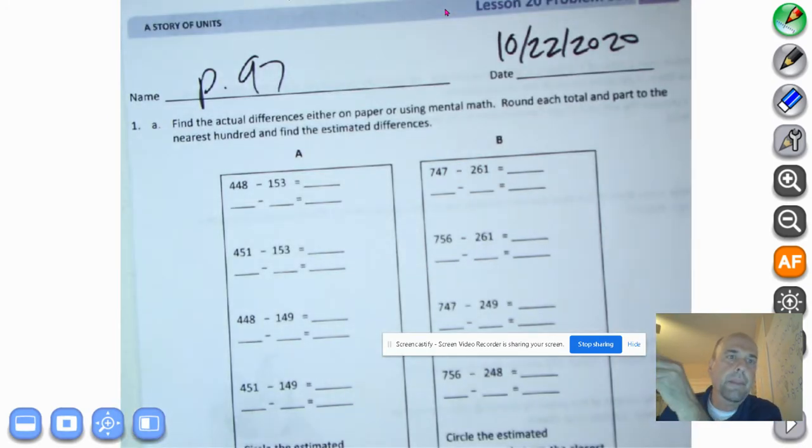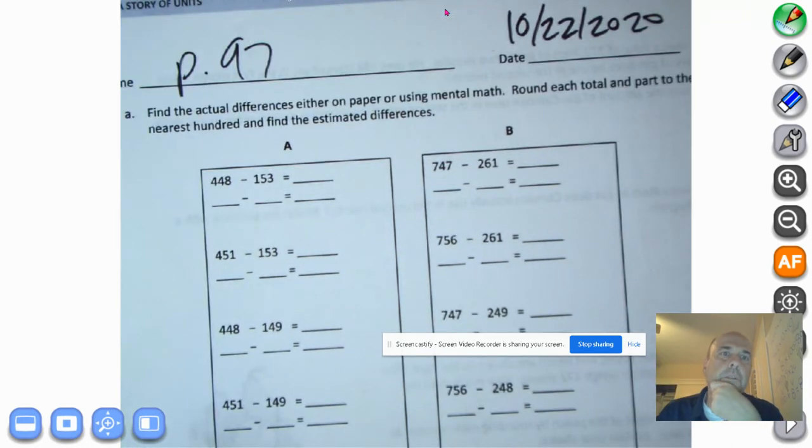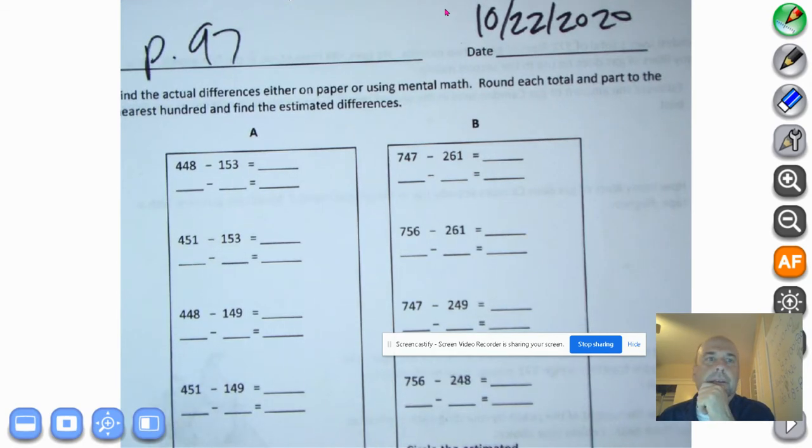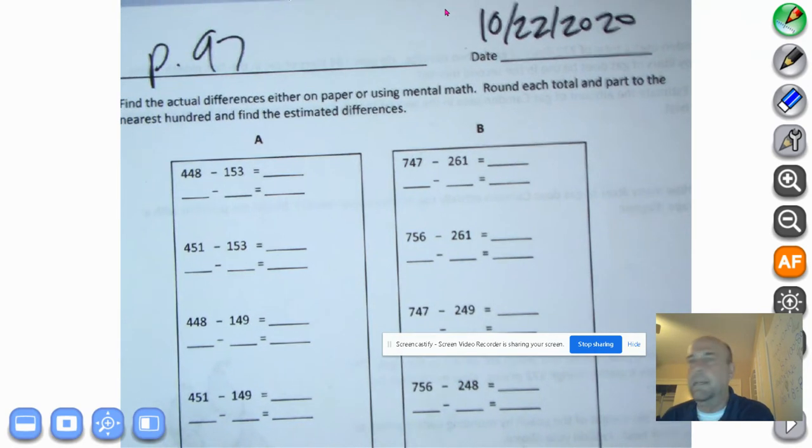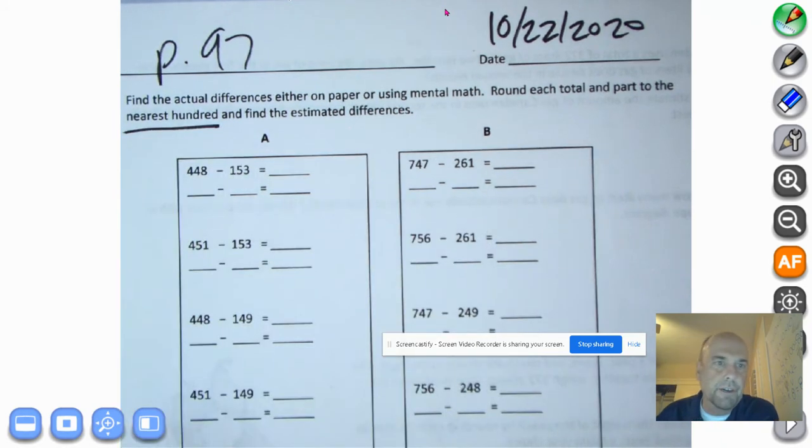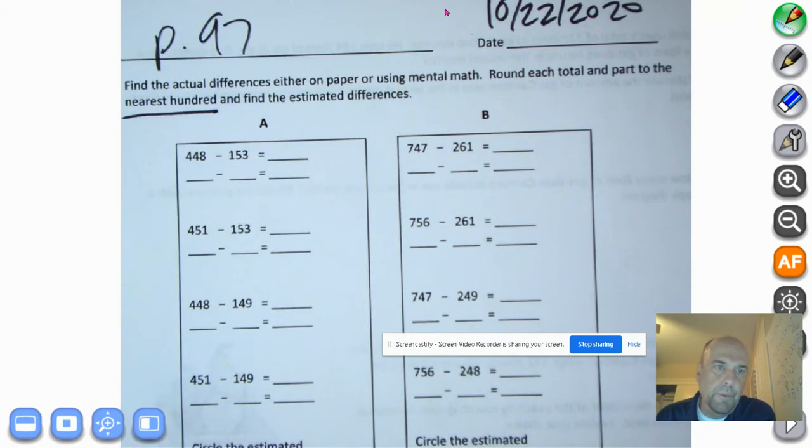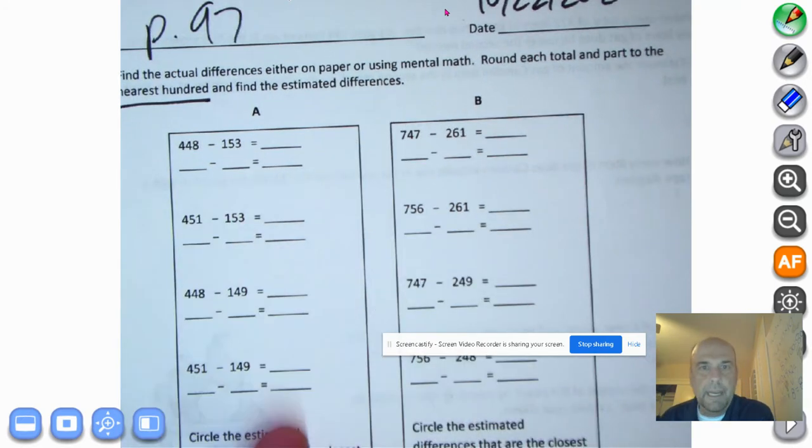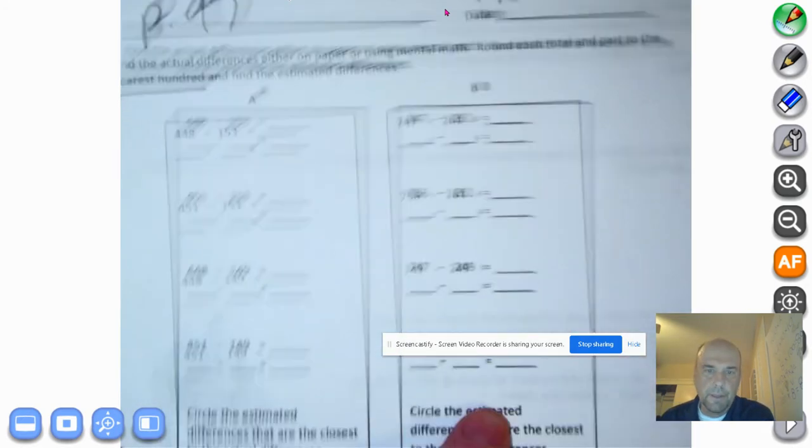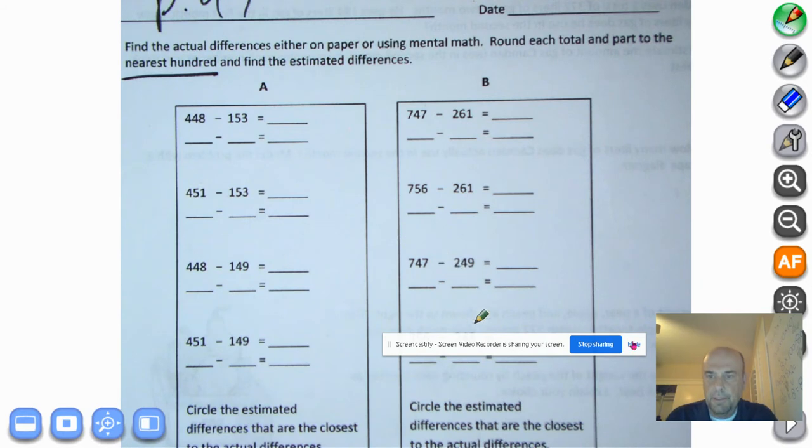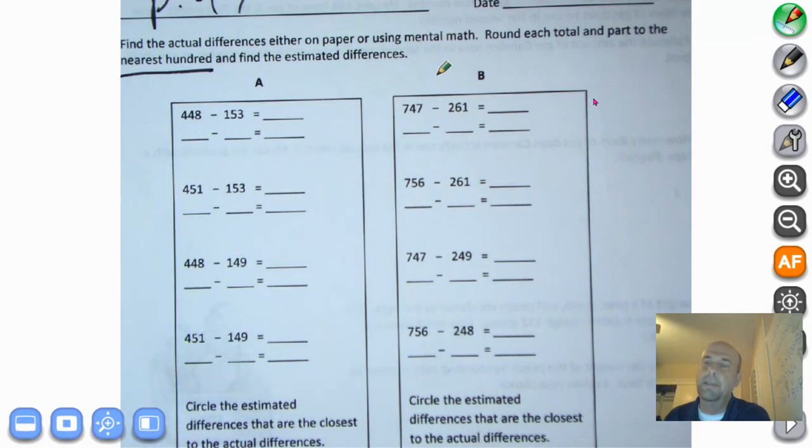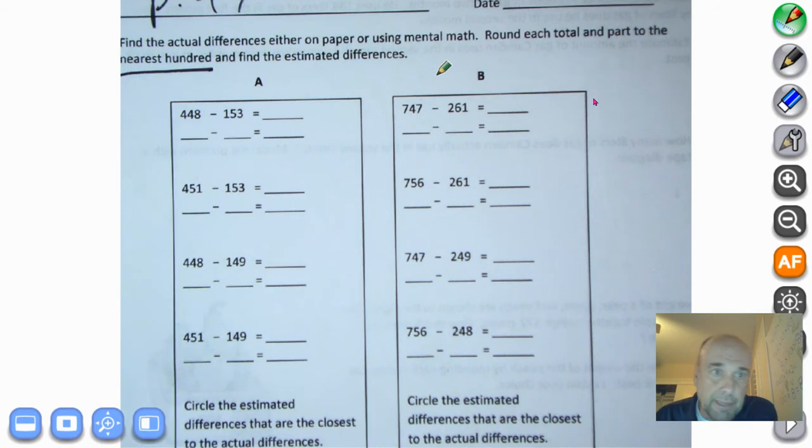Let's put a little light on the matter here. What we're going to do is find the actual differences either on paper or using mental math, round each total and part to the nearest hundred and find the estimated difference. So we're going to round to the nearest hundred for starters. What I'd like you to do is follow along with me for A. You're going to do B on your own and then check the answers. I've set the timer for 10 minutes. Let's dedicate 10 minutes to this.